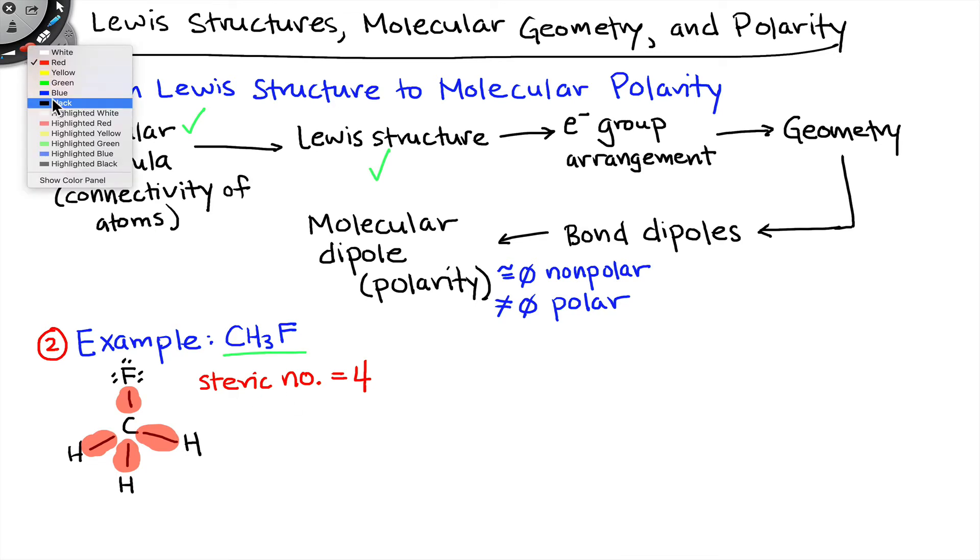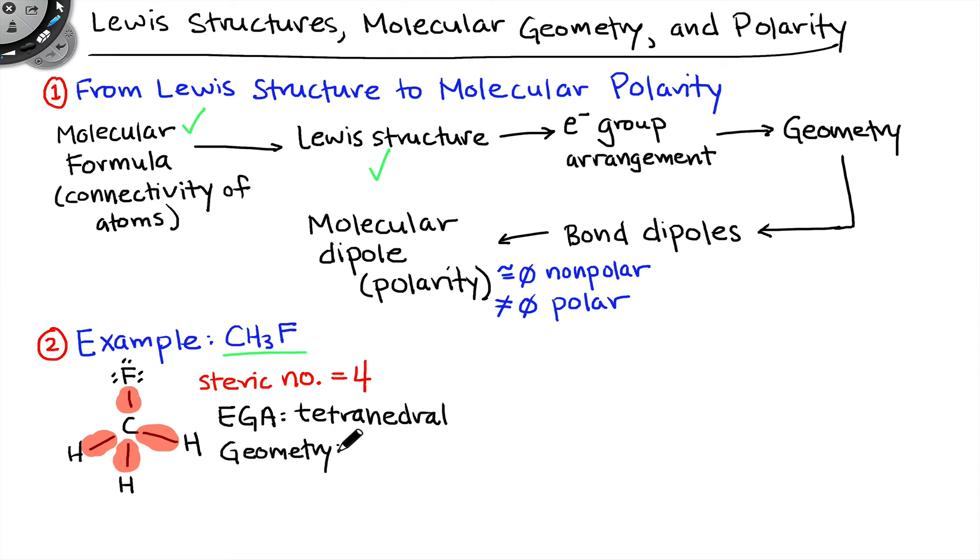There are four regions of electronic negative charge around that central carbon atom. From this, we can reason directly to the conclusion that the electron group arrangement is tetrahedral, since the steric number is four, and all molecules, all central atoms with a steric number of four, have an electron group arrangement that is tetrahedral. There are no non-bonding lone pairs at the central atom either, and so it's very easy to go from the electron group arrangement to the geometry. In this case, with no non-bonding lone pairs at the central carbon atom, we're dealing with a tetrahedral molecular geometry as well.